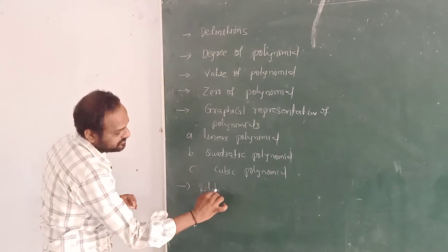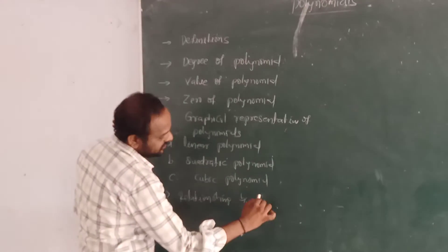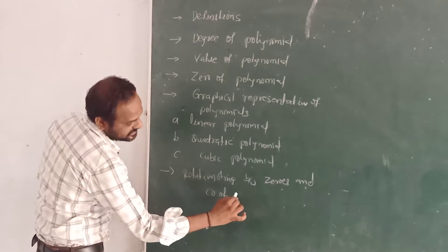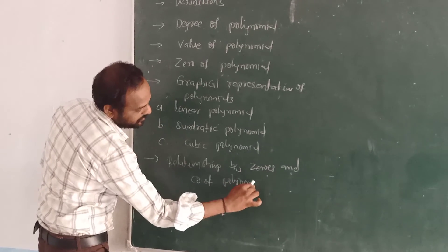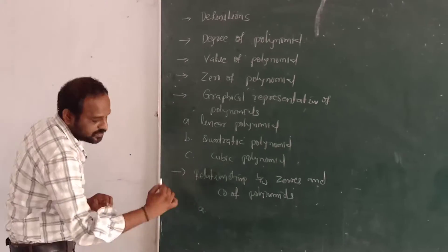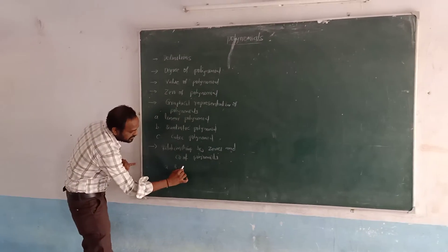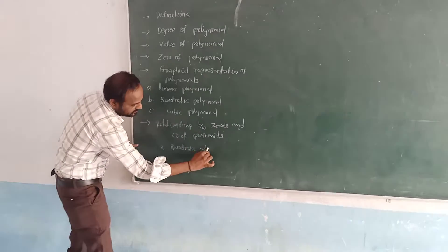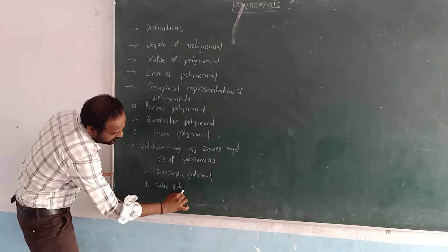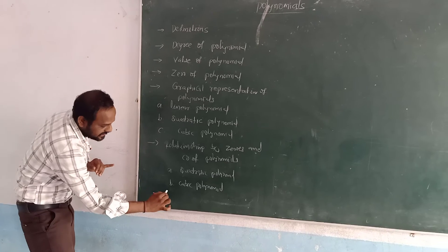After that, we have a relationship between zeros and coefficients of polynomials. In this, two sub-concepts are there: the first one is quadratic polynomial and the second one is cubic polynomial. And the last concept in this chapter is division algorithm.